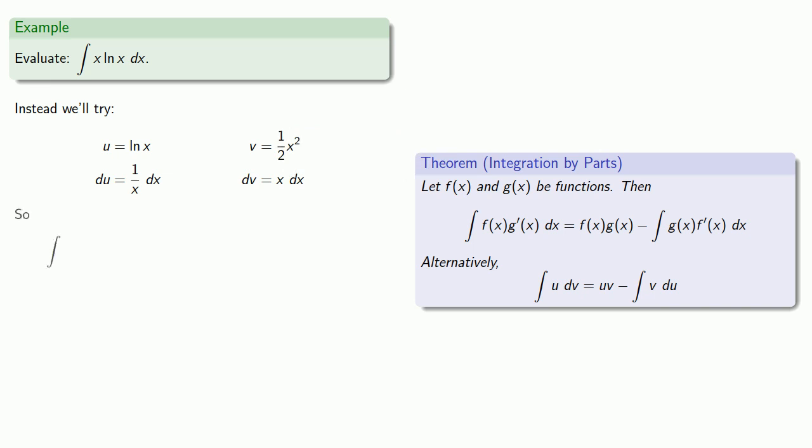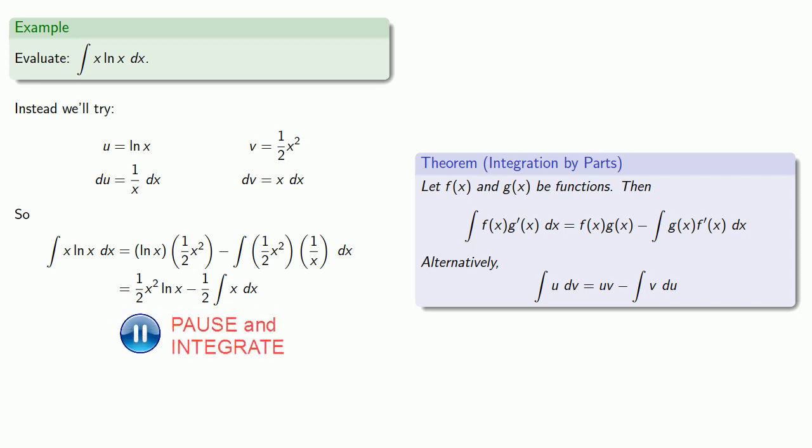So the integral of u dv is uv minus the integral of v du. We'll do a bit of algebraic cleanup. We have an unresolved integral, so let's take care of that. And we get our final answer, plus c.